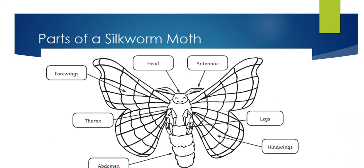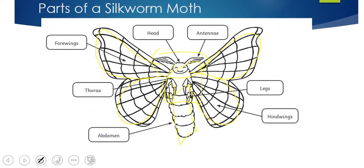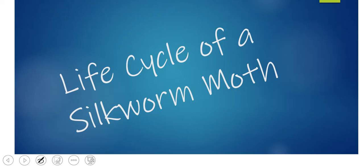Here are the parts of the silkworm moth. Again, same thing — we have the wings at the front, which are called the forewings, and the wings at the back, which are called the hind wings. We have the legs — there are six. The head with the antennae, the thorax in the middle, and the abdomen. So this is going to be a very similar body design for insects.